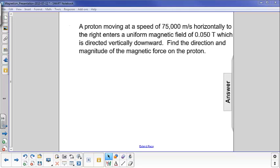A proton moving at a speed of 75,000 meters per second horizontally to the right enters a uniform magnetic field of 0.050 tesla, which is directed vertically downward. Find the direction and magnitude of the magnetic force on the proton.